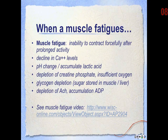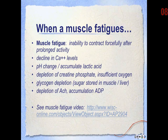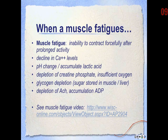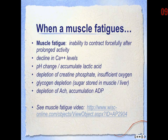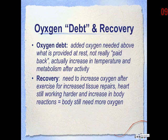When a muscle fatigues, it is unable to forcefully contract after prolonged activity. This can be due to several events: a decline in calcium levels so that myosin binding sites cannot be exposed; a pH change from the accumulation of lactic acid; depletion of creatine phosphate and insufficient oxygen for aerobic metabolism; depletion of glycogen stored in muscle tissue and liver; and depletion of acetylcholine in the neuromuscular junction and accumulation of ADP. There is a link available on ANGEL to watch a YouTube video on muscle fatigue.